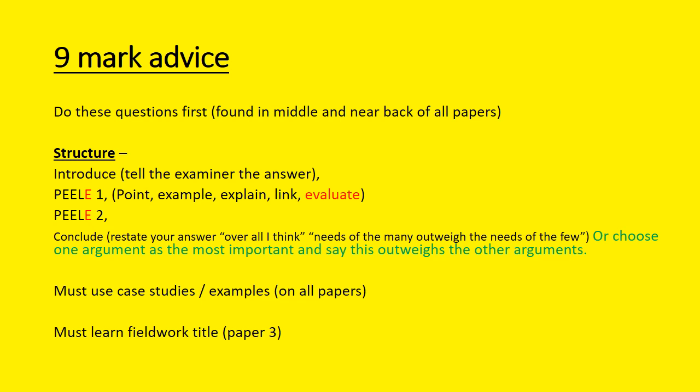A 2019 update: another way to conclude nine mark questions is to choose one of your arguments as the most important. If you identify that this one argument outweighs all others, it demonstrates top-level evaluation. For example, if arguing about a hot desert environment, you might conclude that the isolation of the desert outweighs any opportunities, meaning there are actually not meaningful opportunities there. Simply pick one argument — it doesn't matter which — and argue it is the most important.